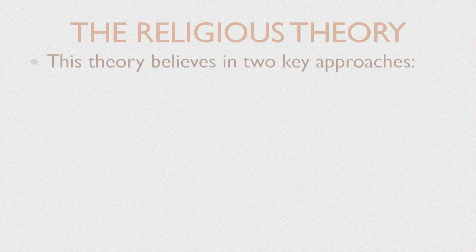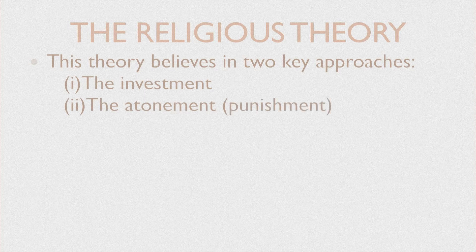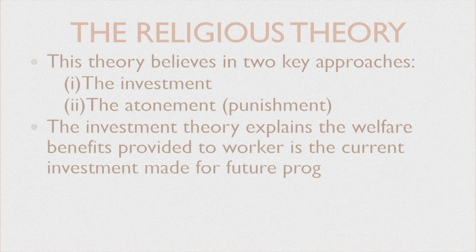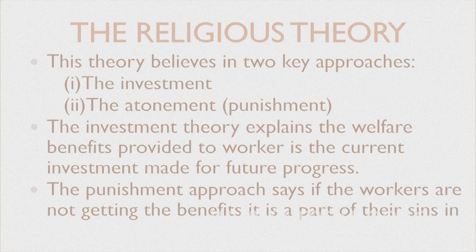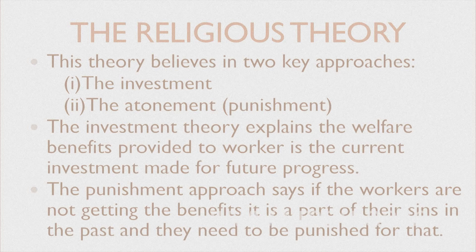The next theory is the religious theory. This theory believes in two key approaches: first, investment, and second, atonement, which means the punishment approach. The investment theory explains that welfare benefits provided to workers are a current investment made for future progress. The punishment approach says if workers are not getting benefits, it is a part of their sins in the past and they need to be punished for that.